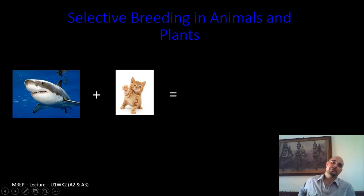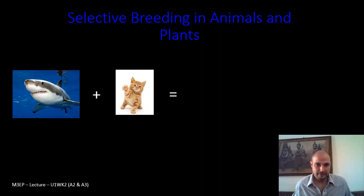Today for our lecture, we're going to be talking about selective breeding in animals and plants. So there are two pictures — a great white shark and a cat. So if we were to cross these two species, what do you think you'd get? This is what I got: a cat shark.